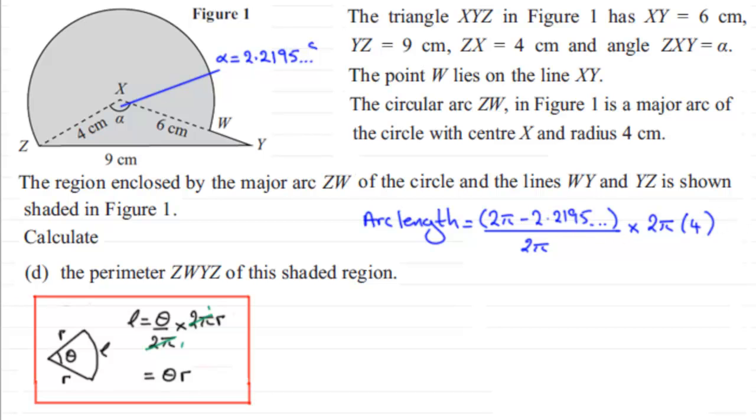Work this out. Remember you don't have to type in the 2π into your calculator. Work this out and you should find that you get 16.2547 and so on, centimetres.